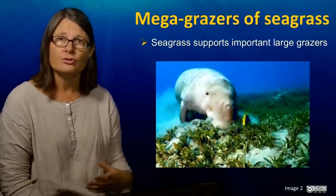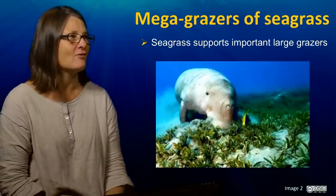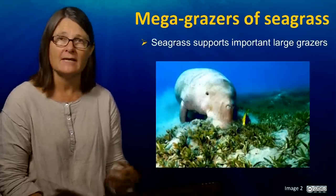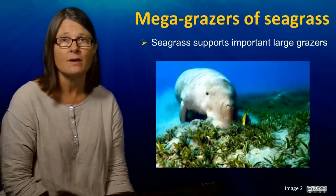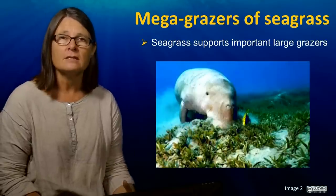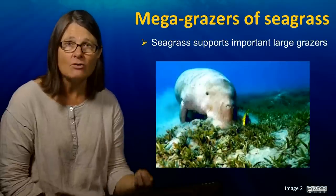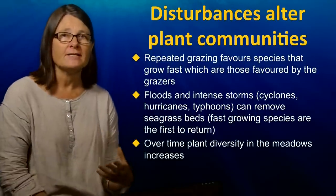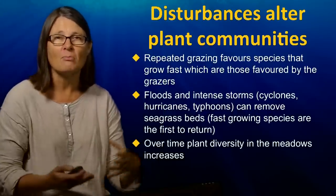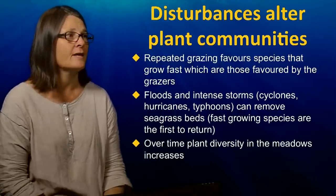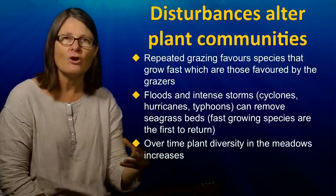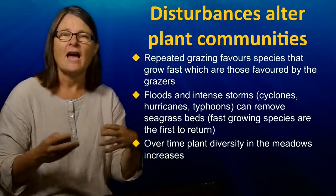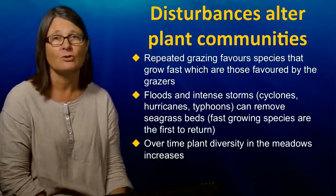One topic referred to again and again through this lecture is mega grazers — the large grazers of seagrass communities. This picture shows a dugong grazing seagrass. These are important animals; manatees of Florida are an endangered species while dugongs are threatened. Conserving seagrass beds is therefore a very important part of conserving these species. Animals like dugongs and manatees disturb the community — their repeated grazing favours fast-growing smaller species, effectively cultivating a habitat more suitable for them. This is sometimes referred to as cultivation grazing.